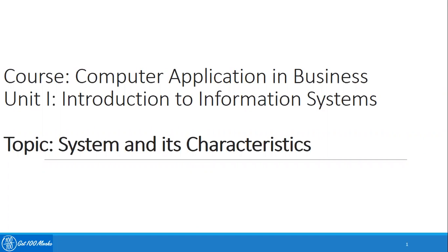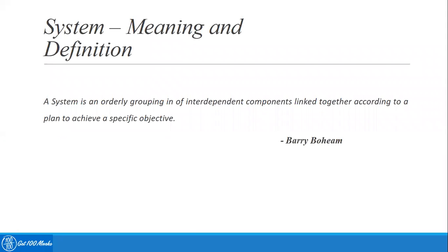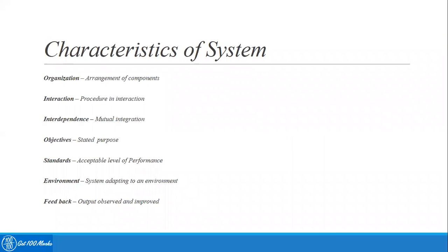Let's move on to session two, an introduction to information systems. Today we will be discussing systems and their characteristics. The session objectives include a recap of the system definition, characteristics of a system, components of a system, and types of systems. As we have seen in the previous class, a system is an orderly grouping of interdependent components linked together according to a plan to achieve a specific objective.